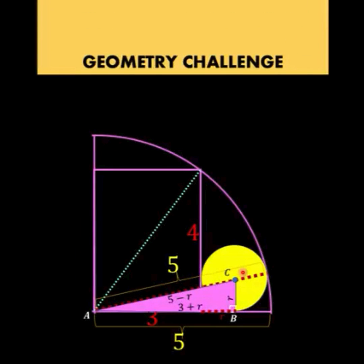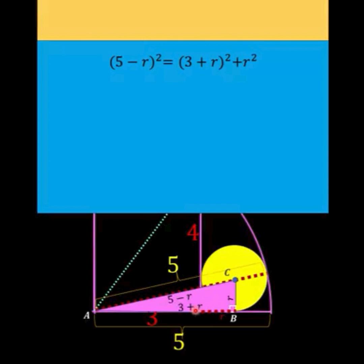With this as our representation of the sides of the right triangle we can now apply the Pythagorean formula in order to solve for r. So we now have the square of the hypotenuse the quantity (5 - r)² is equal to the sum of the squares of the two legs of this right triangle. So we have the quantity (3 + r)² + r².